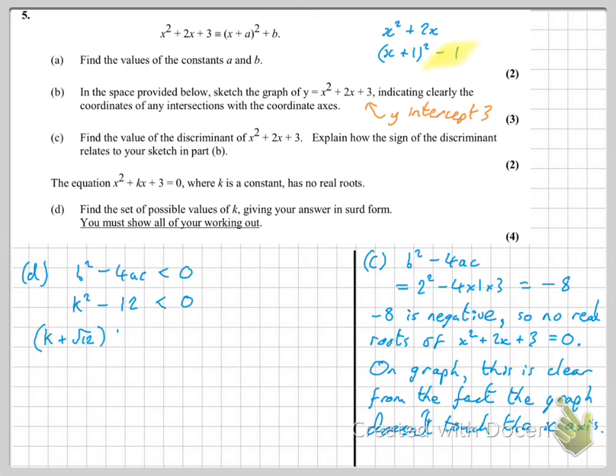That allows you to sketch it really easily, stick the roots on, and we're interested in where that graph is below. It says less than 0, so below the axis, x values that create negative y values, and that's the space between minus root 12 and root 12.